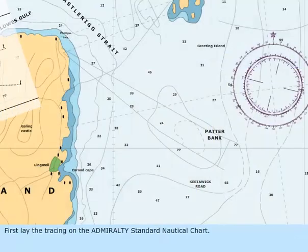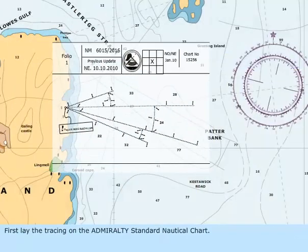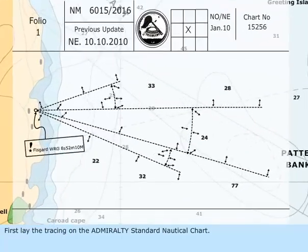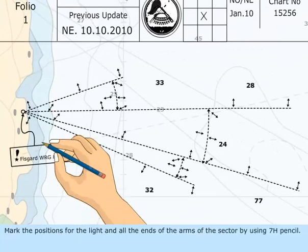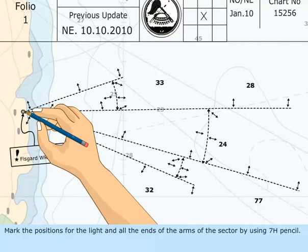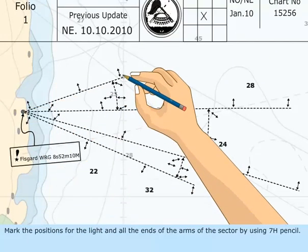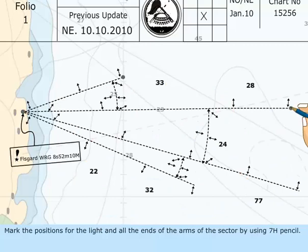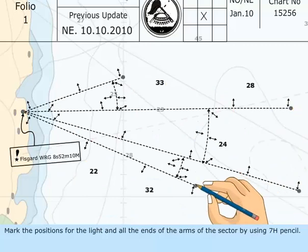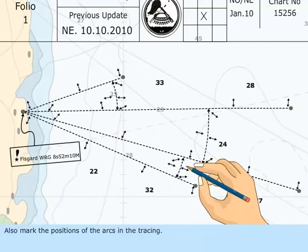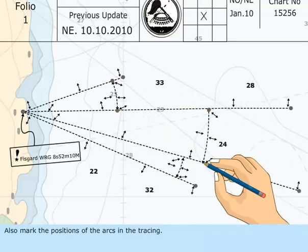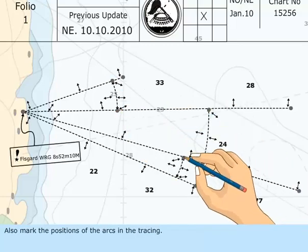First, lay the tracing on the Admiralty Standard nautical chart. Mark the positions for the light and all the ends of the arms of the sector by using a 7H pencil. Also, mark the positions of the arcs in the tracing.